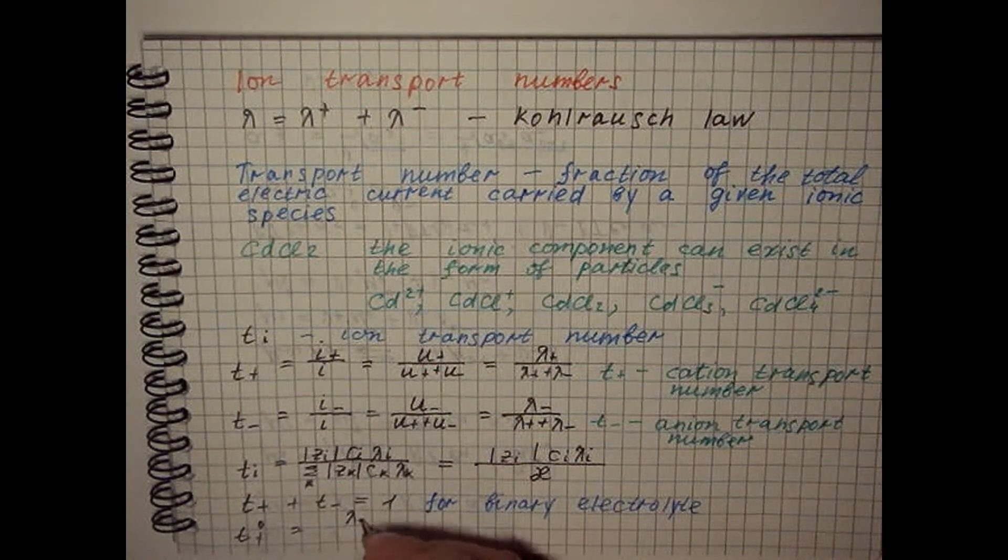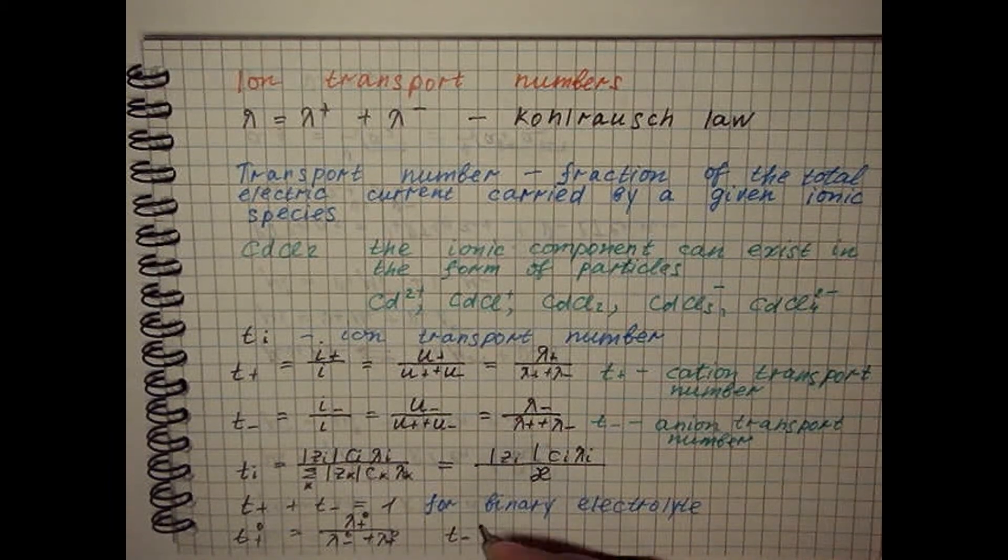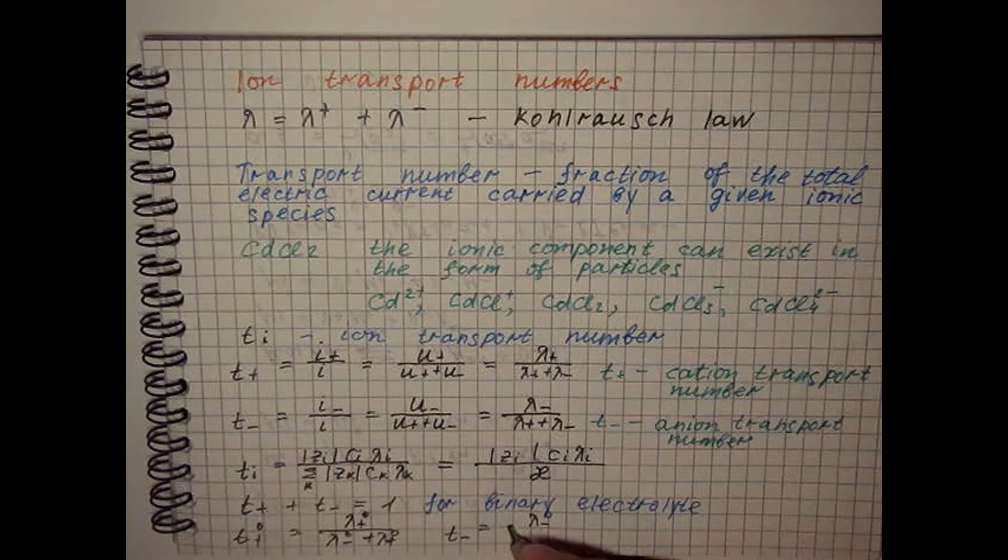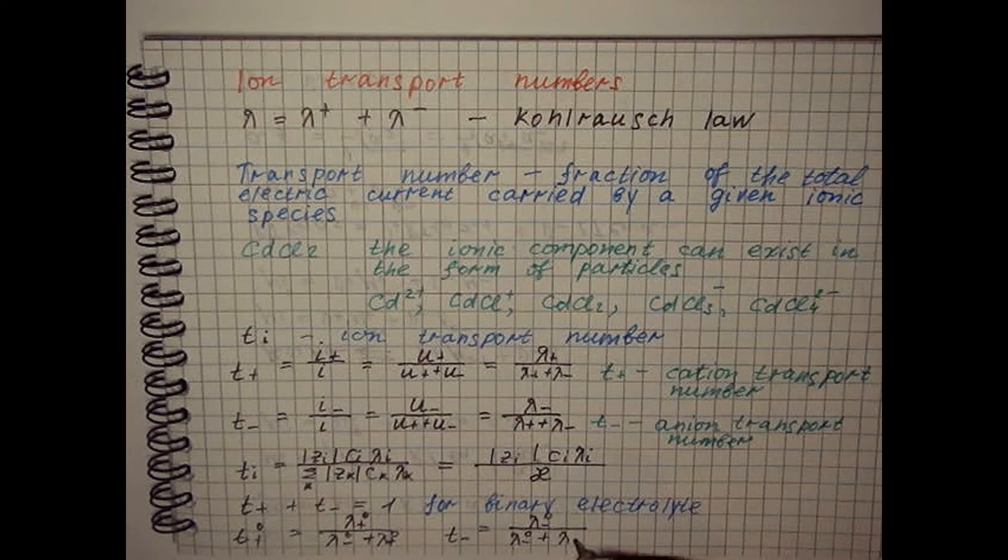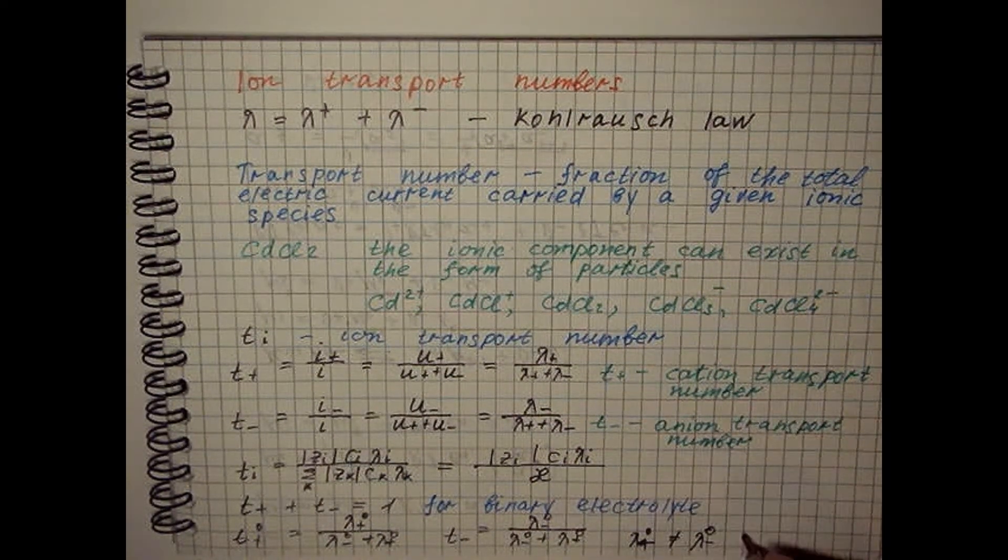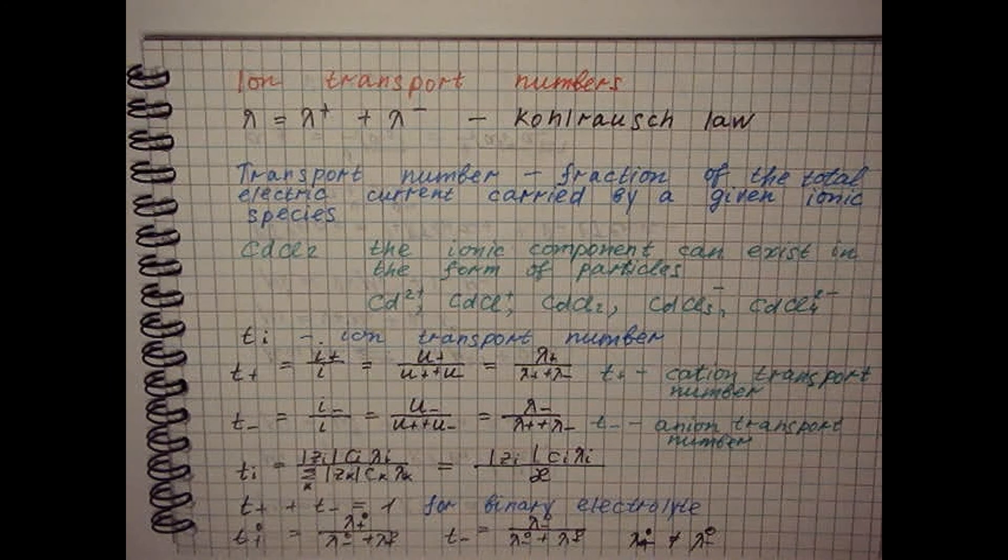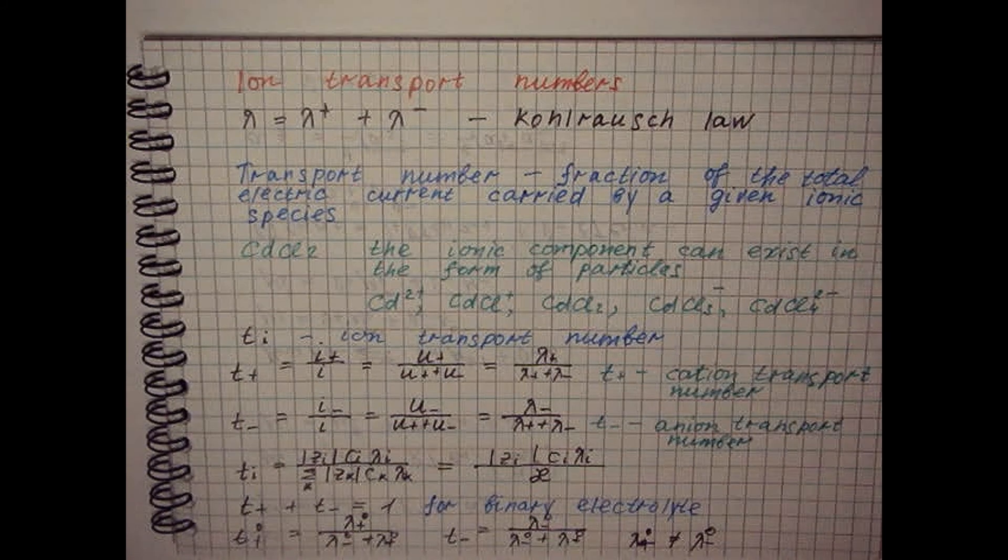These characterize the fraction of the current carried by cations and anions in the absence of ion-ion interaction. When present, this interaction affects the mobility of cations and anions to different extents.